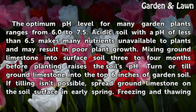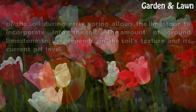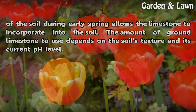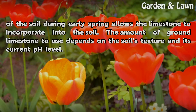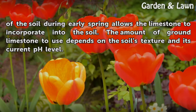If tilling isn't possible, spread ground limestone on the soil surface in early spring. Freezing and thawing of the soil during early spring allows the limestone to incorporate into the soil. The amount of ground limestone to use depends on the soil's texture and its current pH level.